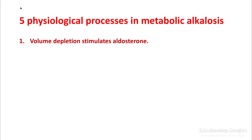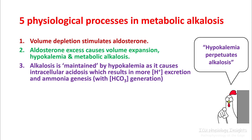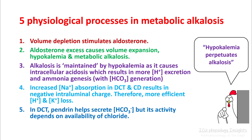In summary, the five physiological processes that will help you understand metabolic alkalosis are: First, volume depletion stimulates aldosterone. Aldosterone causes volume expansion, hypokalemia, and metabolic alkalosis. Alkalosis is maintained by hypokalemia as it causes intracellular acidosis, which results in more hydrogen ion excretion and ammoniagenesis along with bicarb generation. Increased sodium absorption in the DCT and collecting duct results in more negative intraluminal charge, therefore more efficient hydrogen and potassium loss. In the DCT, pendrin helps secrete bicarb but its activity depends upon availability of chloride. The most important one-liner to take away is: hypokalemia perpetuates alkalosis, so make sure that you correct it.